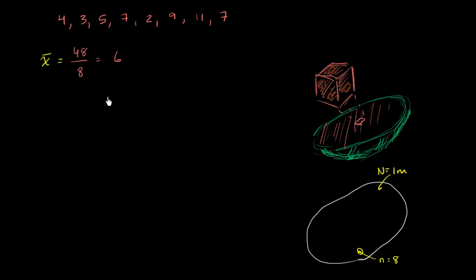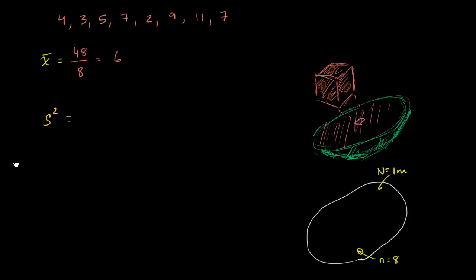But we also want to think about how much spread there is in our population — how much our measurements vary from this mean. We can try to estimate the population variance by calculating the sample variance. And we're going to calculate the unbiased sample variance, dividing by n minus one. Hopefully we're fairly convinced at this point why we do that.